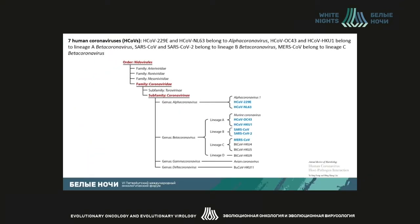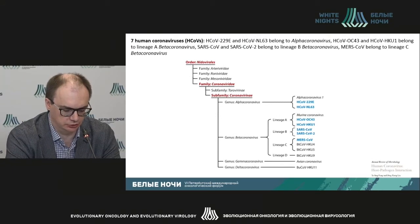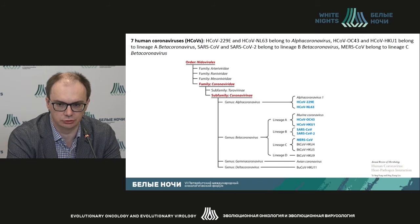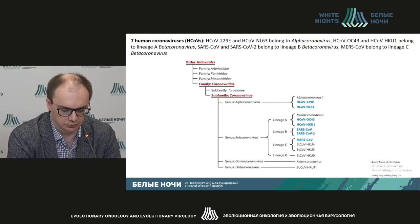Coronaviruses, according to the classification, are composed of four types: alpha, beta, gamma, and delta viruses. They are classified according to their genomic sequences. Alpha and beta infect mammals, while gamma and delta can infect avians as well as some types of mammals.